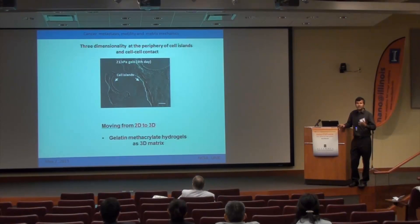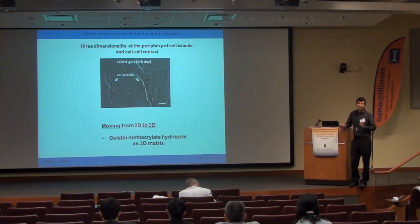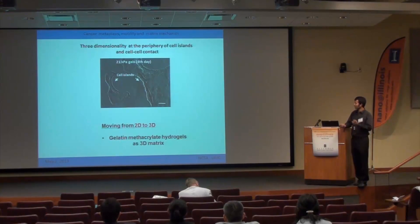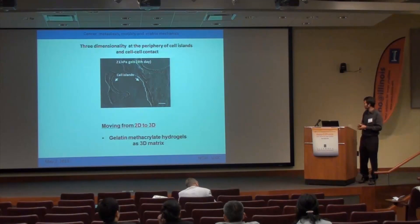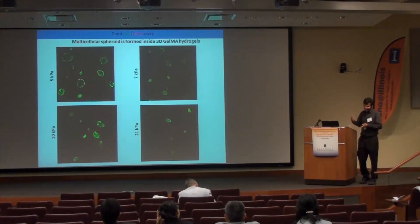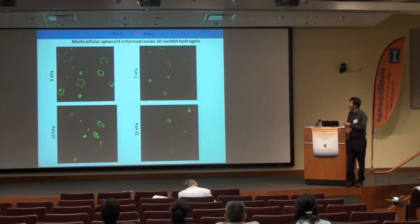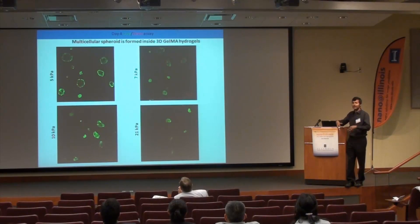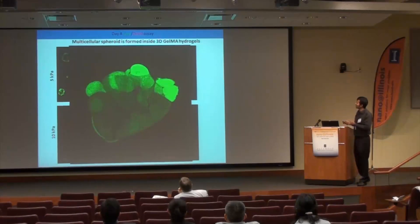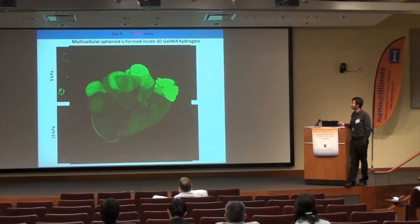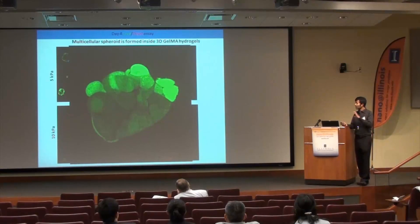GelMA is justified as the matrix because it is hydrolyzed collagen that retains natural collagen binding sites, and collagen is the major ECM in the in vivo colon. We used four different stiffness GelMA hydrogels. Live/dead assay imaging shows that by day 4, cells indeed form multicellular spheroids inside these 3D hydrogels with well-established cell-cell junctions.